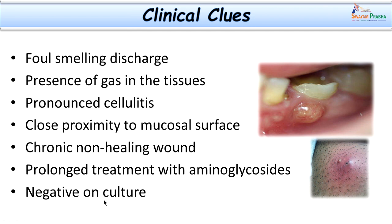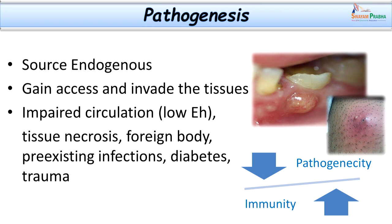Regarding pathogenesis: the source is endogenous. The organisms gain access, invade the tissue, and take the upper hand whenever there are supportive factors like impaired circulation. Tissue necrosis causes inflammation, which adds to edema; edema causes pressure on vessels, leading to compromised blood supply — a vicious cycle. Tissue necrosis, edema, and compromised blood supply ultimately lower the redox potential of surrounding tissue. A foreign body can clog tissues or vessels further, impairing blood supply. Diabetes can also add to the pathogenesis, with reduced immunity increasing pathogenicity.